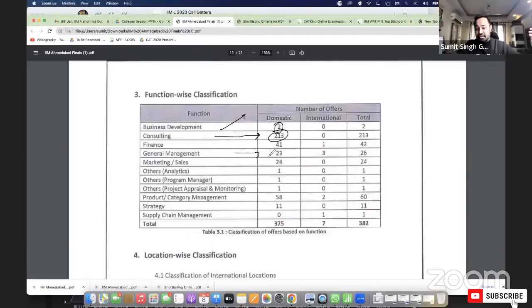Marketing sales - losing its charm - 24. Analytics - only 1. Program Management - 1. Project Appraisal Monitoring - 1. Product Management - 58. Total 375 odd people. Understand?